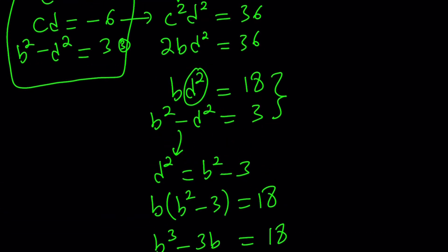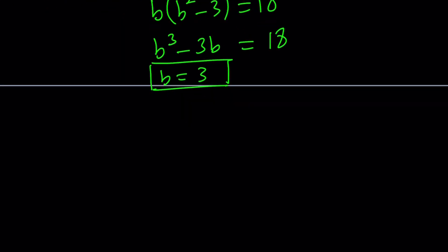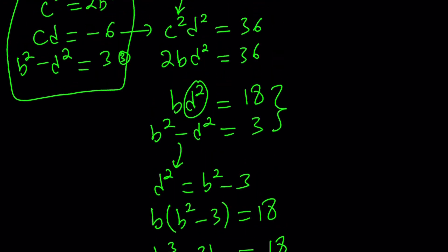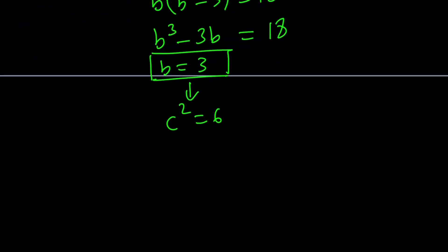We know that c squared is 2b. So c squared is going to be 6 from here. And since the product cd is negative 6, let's go ahead and write it down here. cd is equal to negative 6. Now I didn't want to use the c squared d squared because that's going to give me some extraneous solutions. But I still need to check.